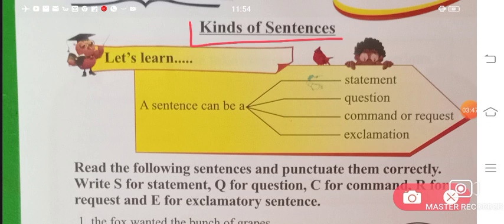Now comes kinds of sentences. A sentence can be a statement, you can ask a question, you can give an order or command, you can make a request, and the last is exclamation.